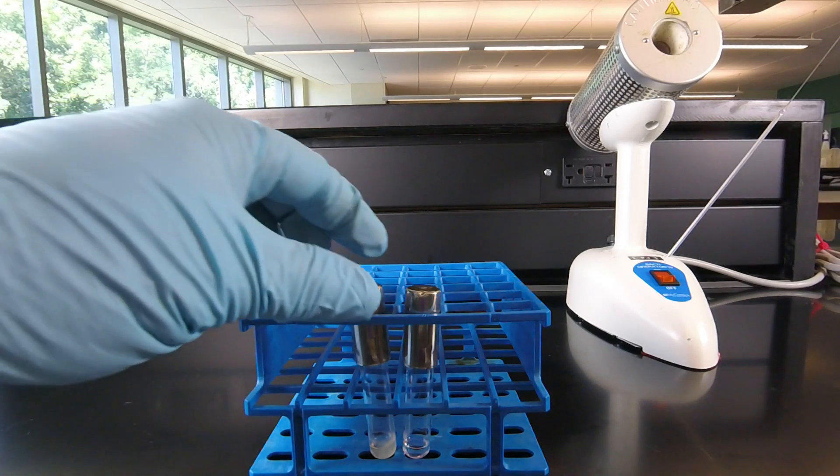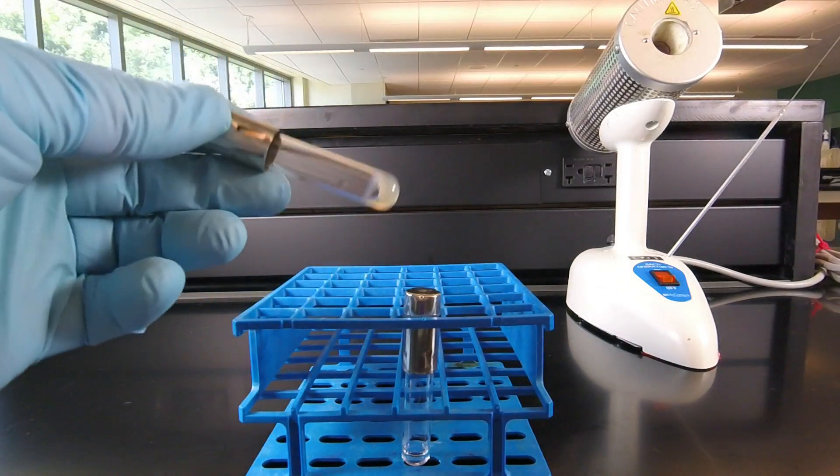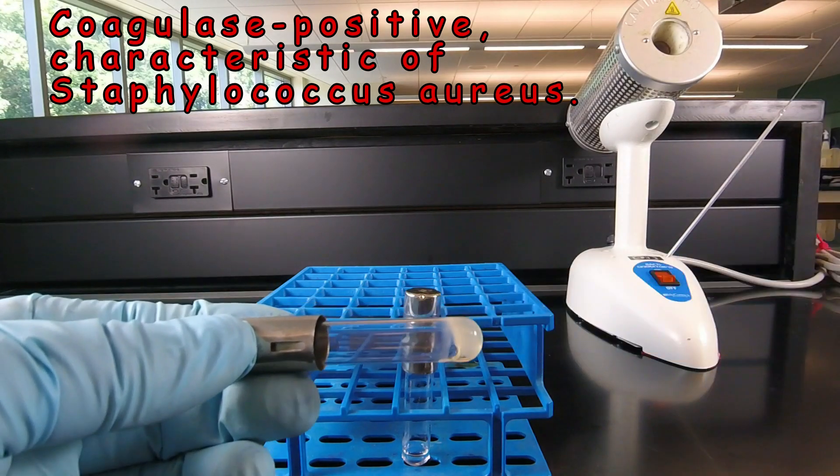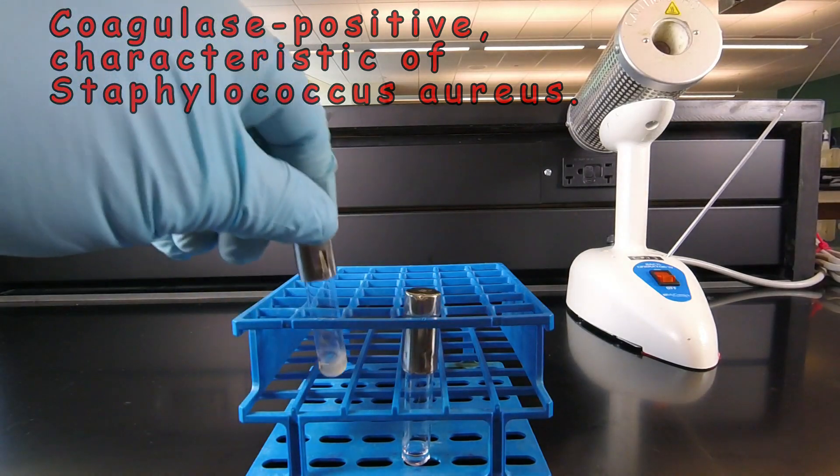This is a tube of citrated rabbit plasma that was inoculated and incubated. This is a coagulase positive bacterium. We'll see that the rabbit plasma at the bottom has gelled. So that would be coagulase positive.